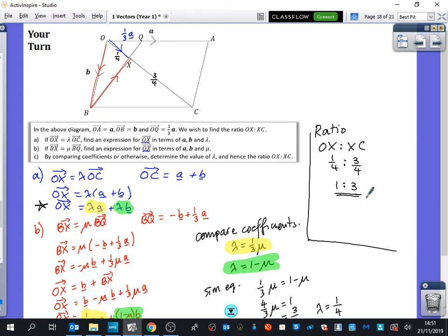Out of interest, the mu ratio said that from B to X was three quarters. Interestingly, that bit up there is one quarter as well. Pretty tricky kind of question, but I'm going to ask you for your homework only to do one more question like this and to watch both of these videos again to remind you of it if you can't do it.